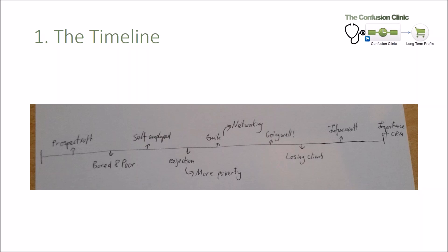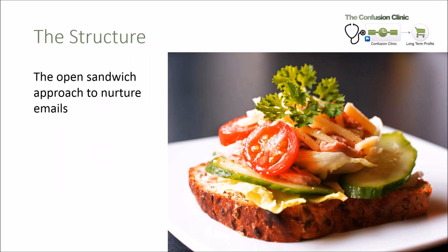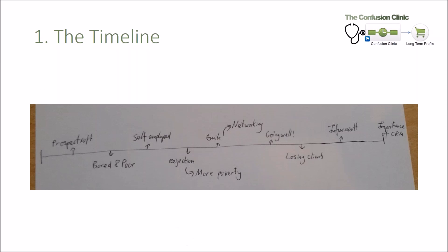What I do now is I map out the story part of the email. So remember we're doing the open sandwich format, story first, then information. I map out the story part of the nurture email on a timeline.